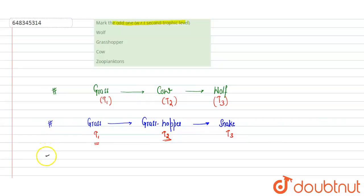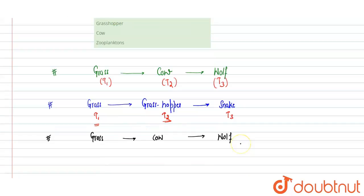Next, we have the cow. We have already seen this: grass, then cow, then wolf. Cow is at the second trophic level, while wolf is at the third trophic level. So cow is exhibiting the second trophic level.